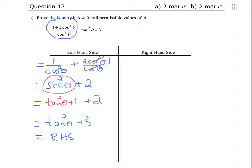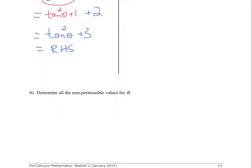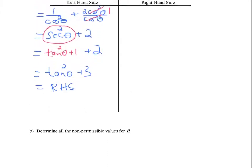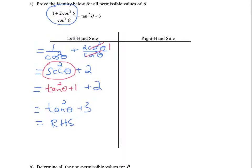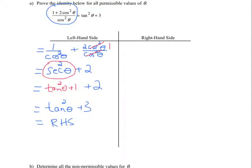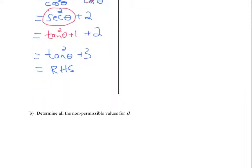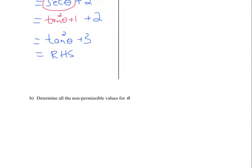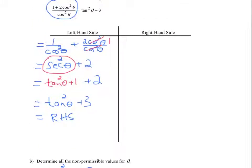The next thing we're going to do is question B: determine all non-permissible values. In other words, we cannot divide by 0. If we look at what I just manipulated up here, the only place where we're potentially dividing by 0 is 1 over cos squared. So cos squared cannot equal 0. Cos is on the bottom. So what do we want to solve? We want to solve cos squared theta equal to 0.